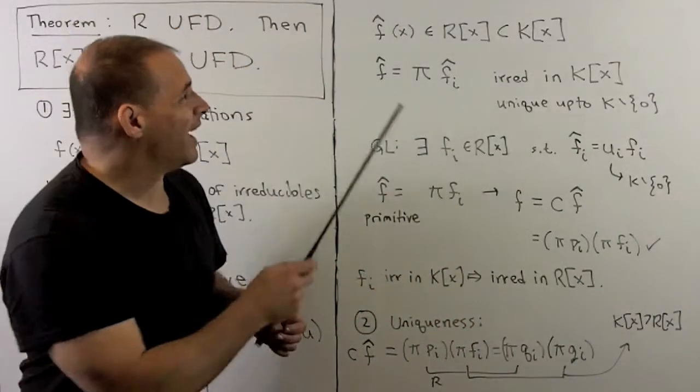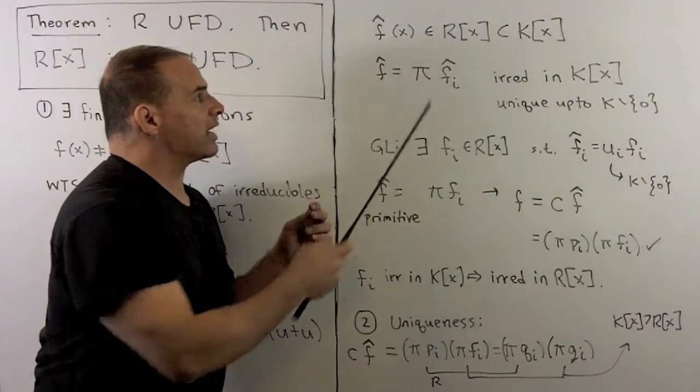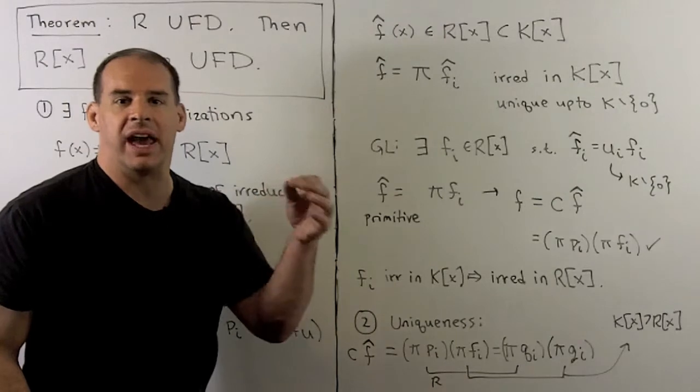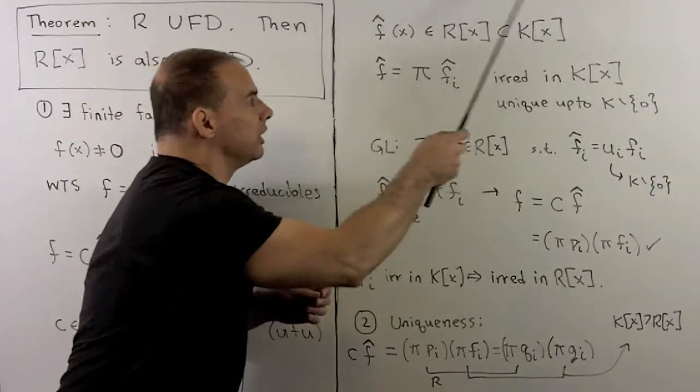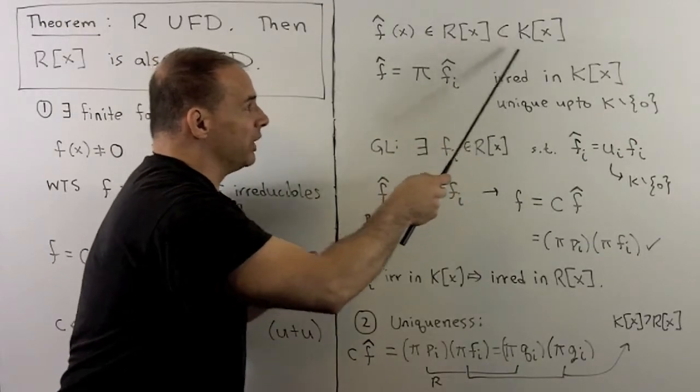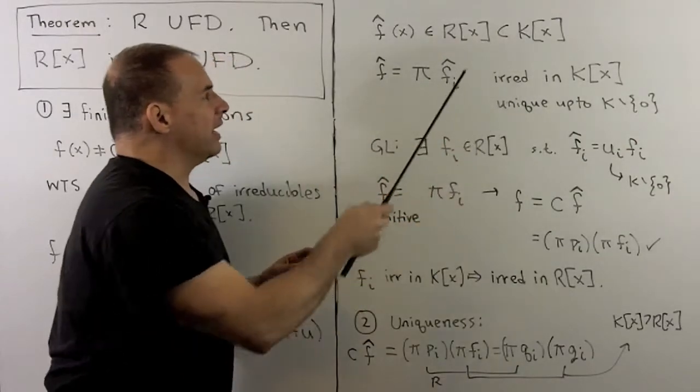On the other hand, f̂ sits inside of R adjoin x, that sits inside of K adjoin x, where K is the fraction field for R. So this is a Euclidean domain. That means it's a unique factorization domain.